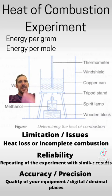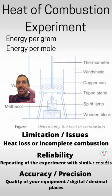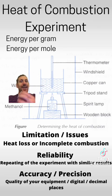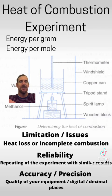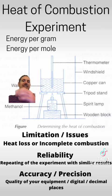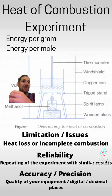That means we calculate a lower energy content every single time, so our accuracy — the actual value — is not right. However, we can still use this experiment to compare fuels. We can see that one fuel releases more energy than another. So there are limitations: this experiment really finds the comparison, not the exact value.